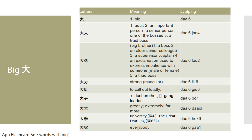The last character I want to talk about in this lesson is the word 'big,' or daai in Cantonese. Of course, there are many combinations of the word daai to express different things. For example, if you append the Cantonese character yun, meaning 'human,' you get daai yun, which means 'an adult' — literally a big person. You can also refer to a senior or important person, like a judge in court, as daai yun.